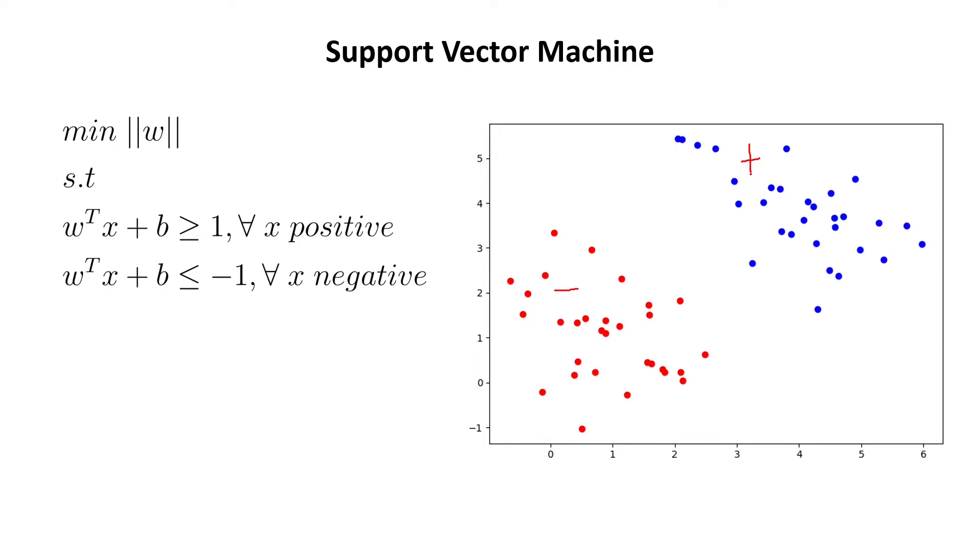And there are many ways of separating these two classes with various decision boundaries. For instance, this is a plausible decision boundary that separates these two classes. And also like this one would be a plausible decision boundary. But what the SVM does is basically to find the best separating decision boundary between these two classes, or the decision boundary that has the largest margin.